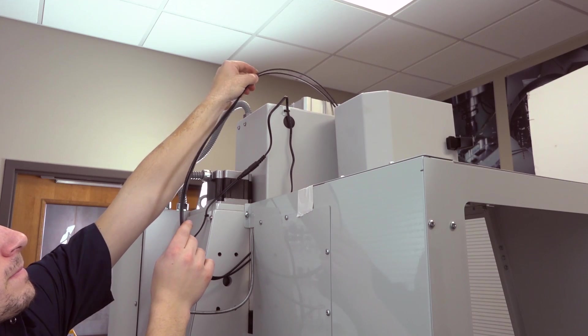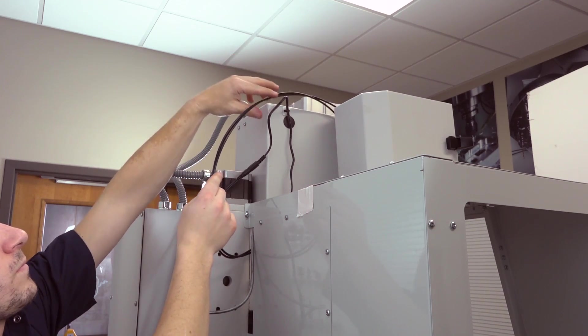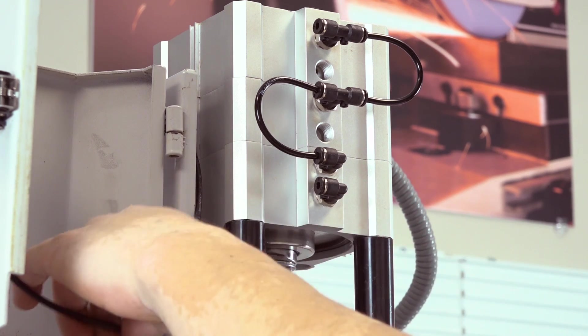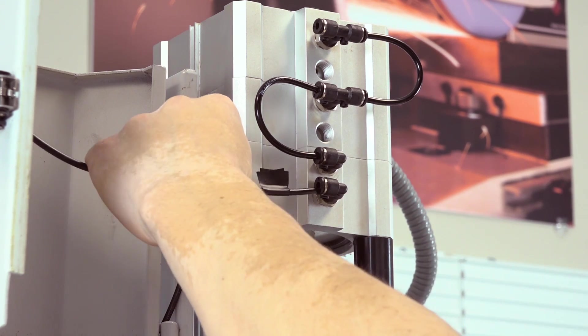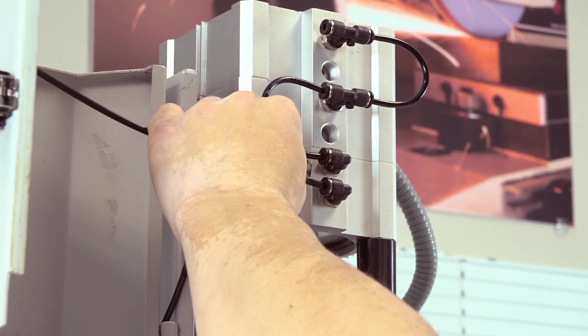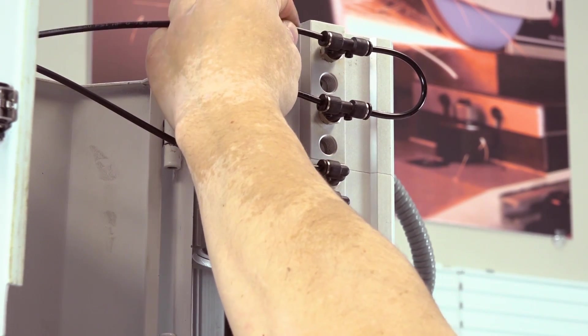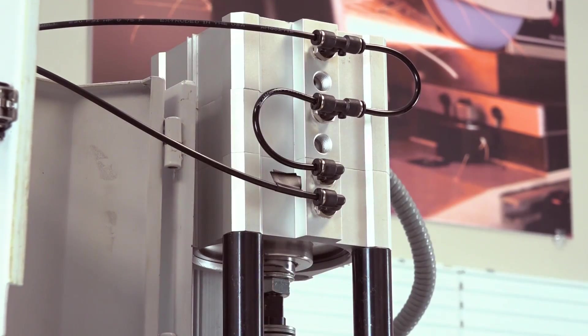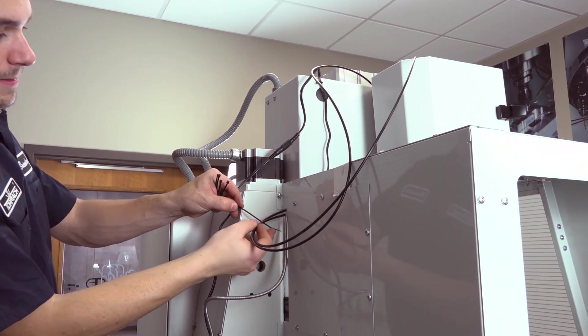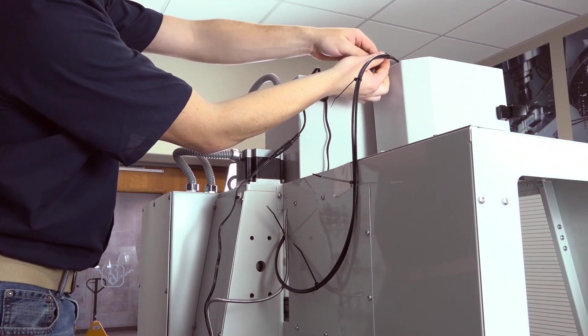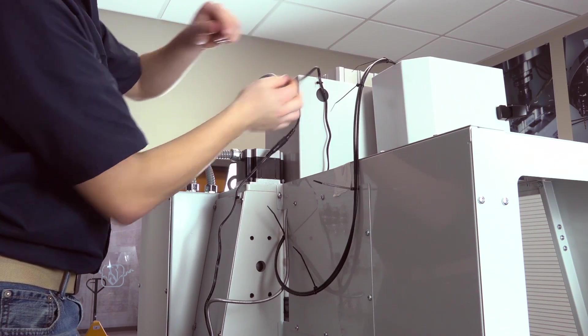Route the loose ends of the retract and advance air lines together up the machine's Z column. Connect the retract air line to the bottom push connect elbow on the power drawbar cylinder. Connect the advance air line to the top T-connector on the power drawbar cylinder. Secure the retract and advance air lines together using 5 cable ties. Make sure the cable is unrestricted and away from any pinch points.